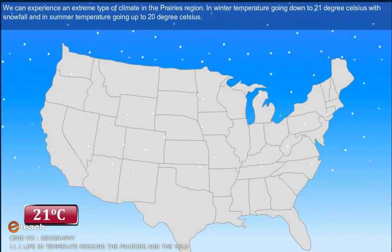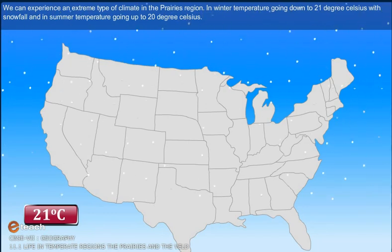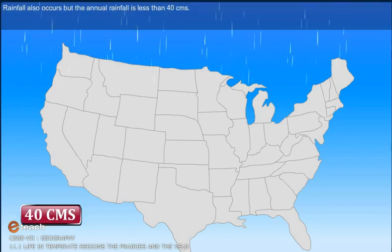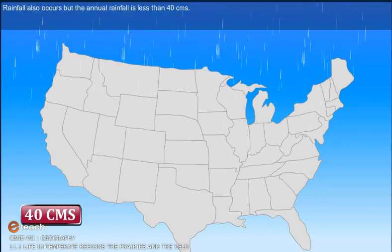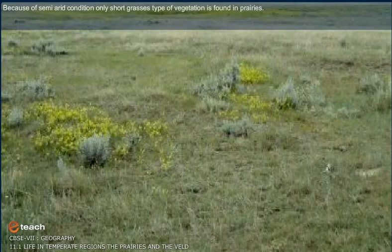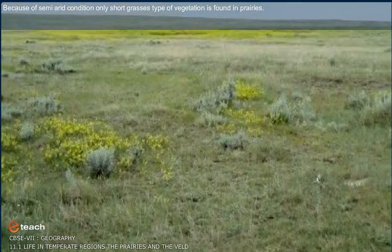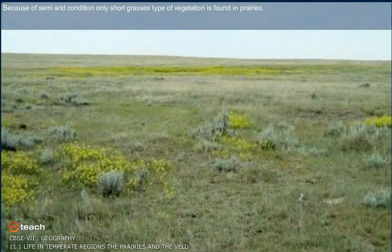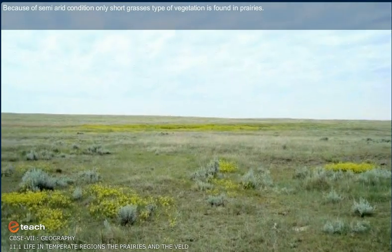In winter, temperatures go down to minus 21 degrees Celsius with snowfall, and in summer, temperatures go up to 20 degrees Celsius. Rainfall also occurs, but the annual rainfall is less than 40 centimeters. Because of semi-arid conditions, only short grass type of vegetation is found in the prairies.